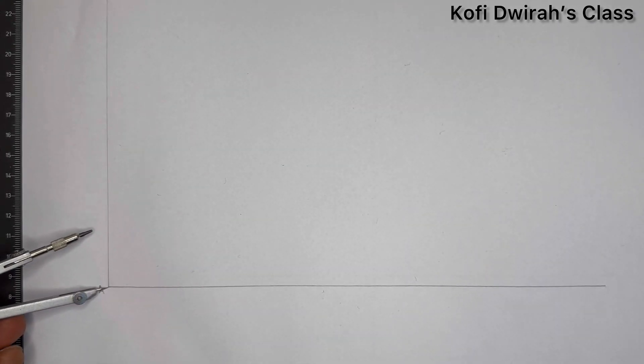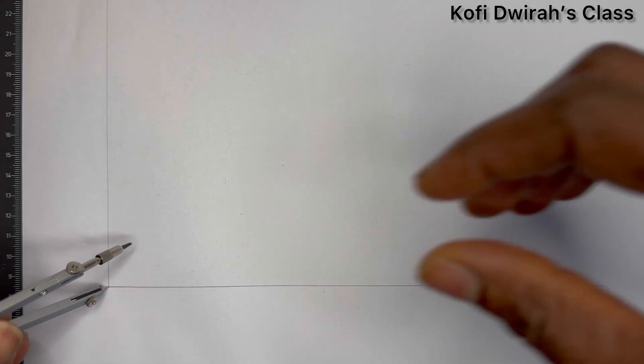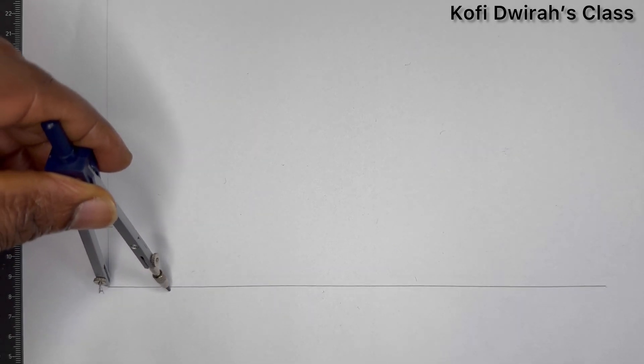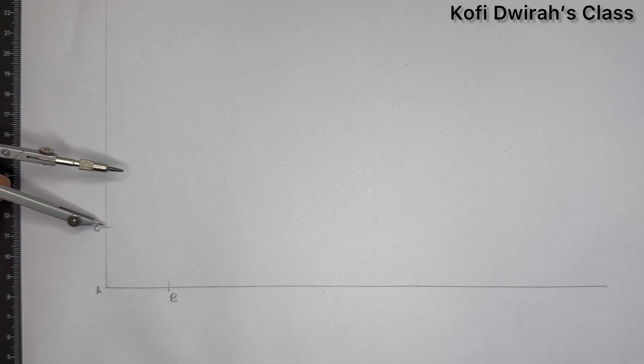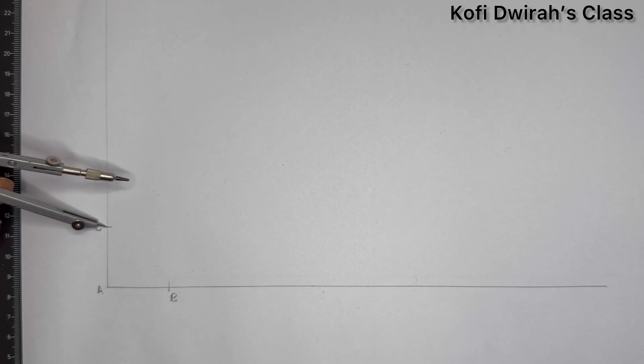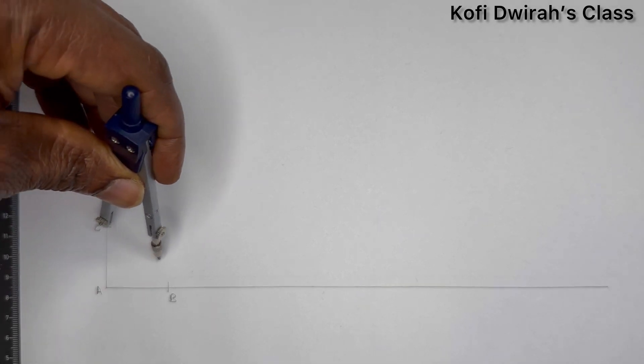Now let's consider this point to be point A. At point A, with a radius of 3 centimeters or 30 millimeters, you draw an arc. With the same radius, you draw another arc. We have this point as point B, and we have point C. Then with the same radius at point C, you draw another arc.